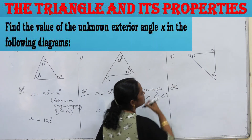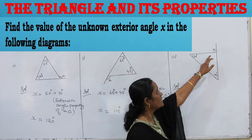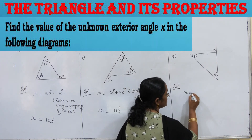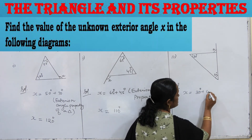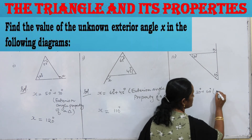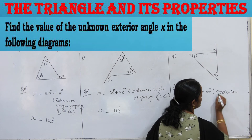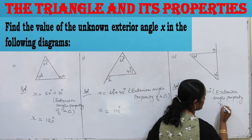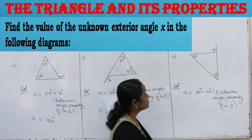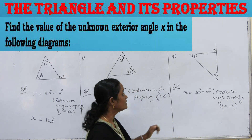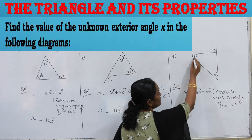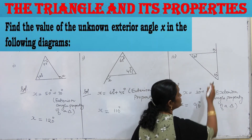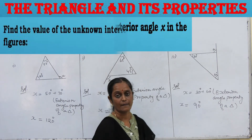In the third diagram, find the exterior angle x. The two interior opposite angles are 30 degrees and 60 degrees. By the exterior angle property of a triangle, x equals 30 plus 60, which is 90 degrees.